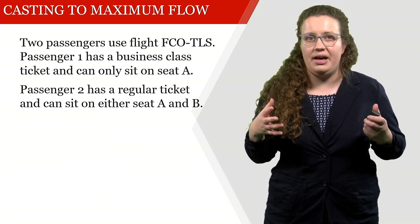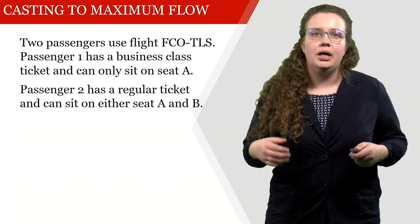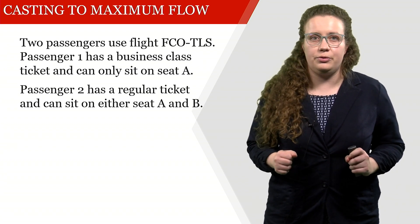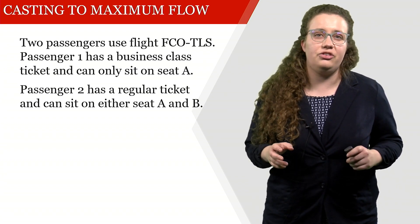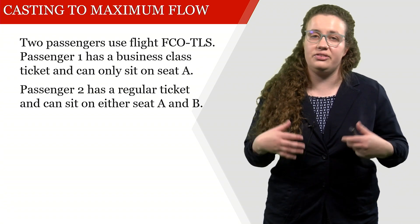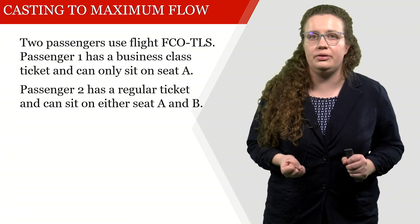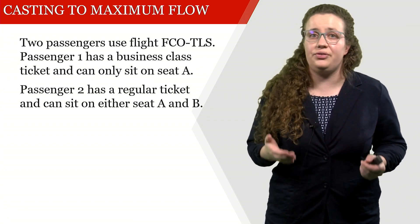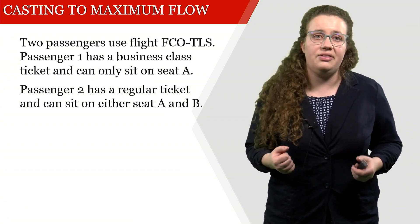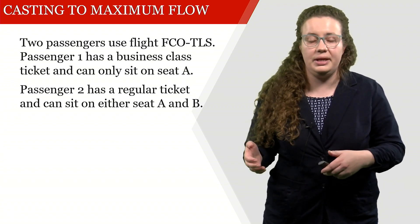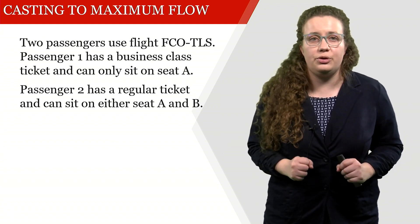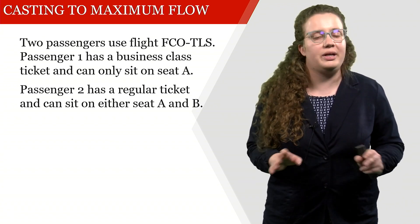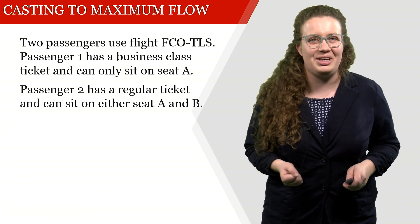We have two passengers, both using the flight from Rome to Toulouse. Passenger one has no business class ticket and thus can only sit on seat A. Passenger two has a regular ticket and can sit on either seat A or seat B. Of course, passenger two would like to be upgraded, but we can't do anything about that just yet.